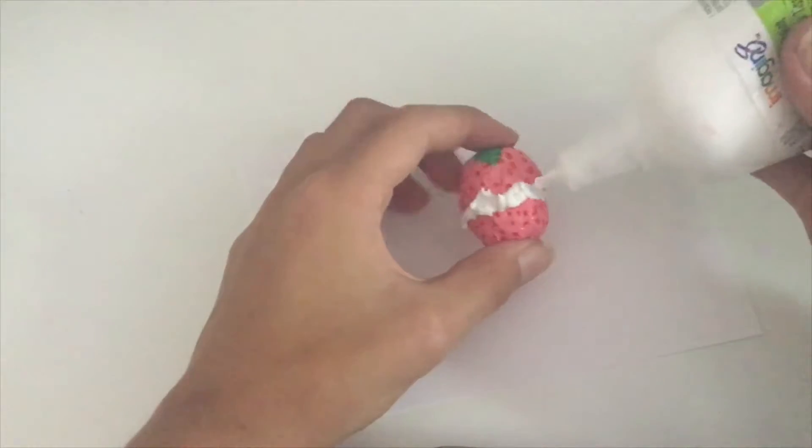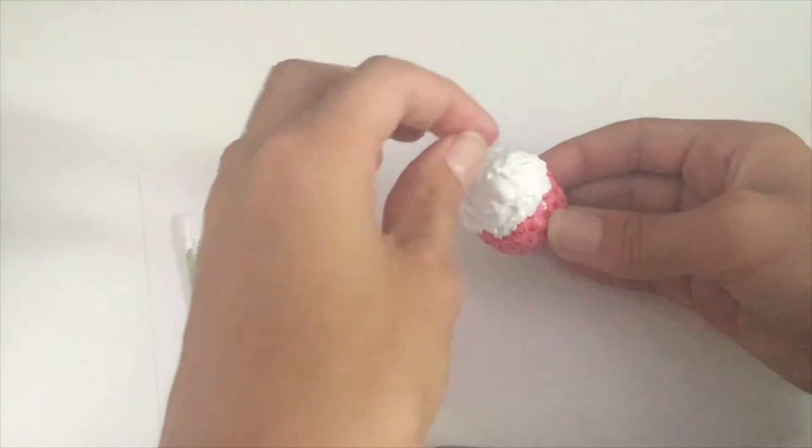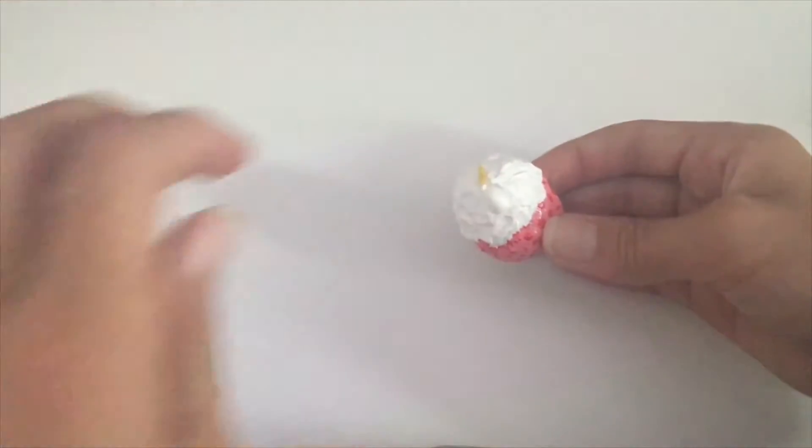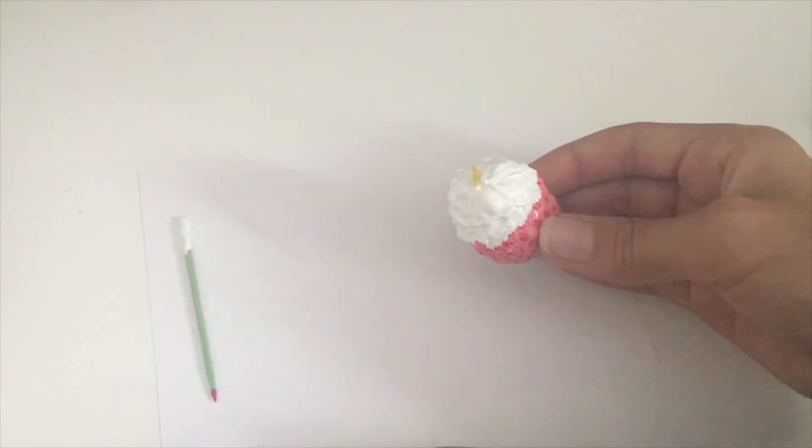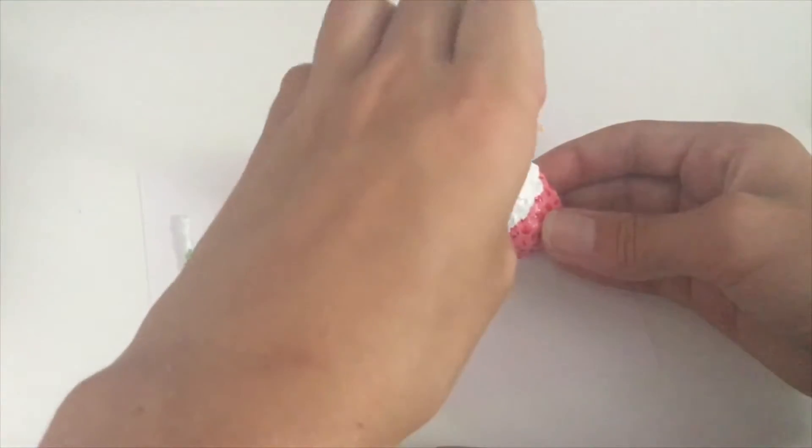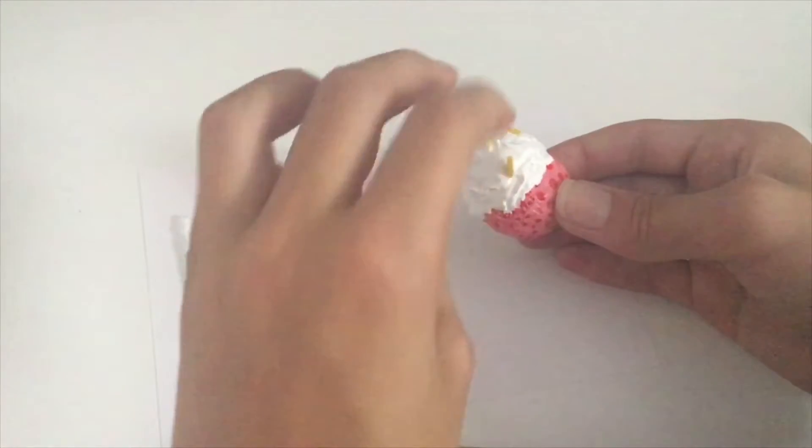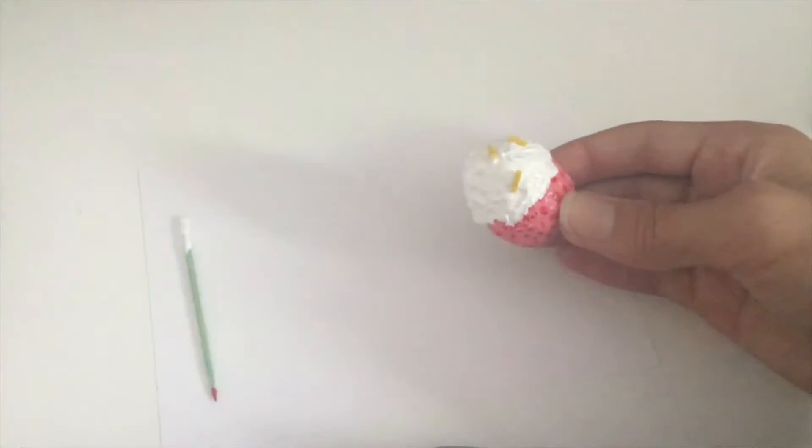Then you go in with some white puffy paint and just kind of make it look like the strawberry has been dipped in white frosting. And then I'm going in with some yellow clay sprinkles. I can do a tutorial on how to make clay sprinkles if you want me to.